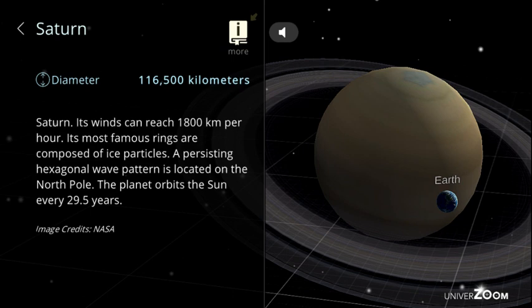Saturn, diameter: 116,500 kilometers. Its winds can reach 1,800 kilometers per hour. Its most famous rings are composed of ice particles. A persisting hexagonal wave pattern is located on the North Pole. The planet orbits the Sun every 29.5 years.